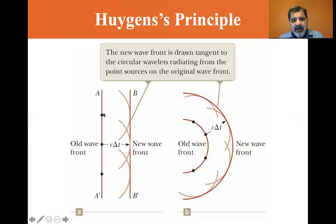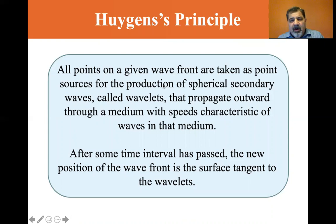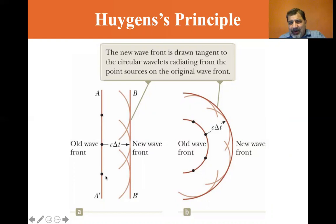And if we look at what he says, all points are taken as point sources. So we're looking at three point sources here: one, two, three. There are many of them. We're just picking three so that the image doesn't get too cluttered. So from this point source we have this wavelet, from this point source we have this wavelet, and from this point source we have this wavelet.